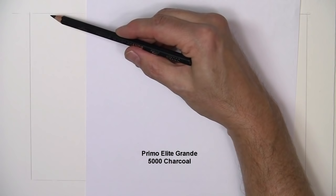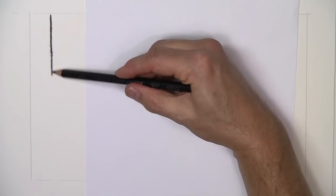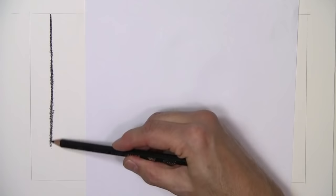You can do this same test with graphite. The softer the graphite, the more difference there will be between the blending materials. Again, through the magic of editing, you didn't have to watch me do that.